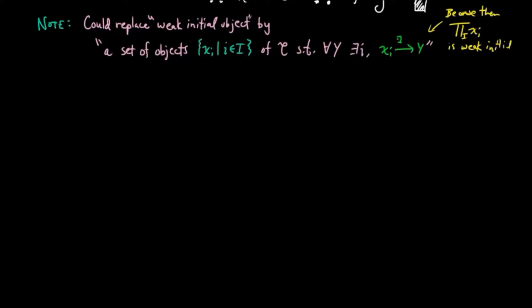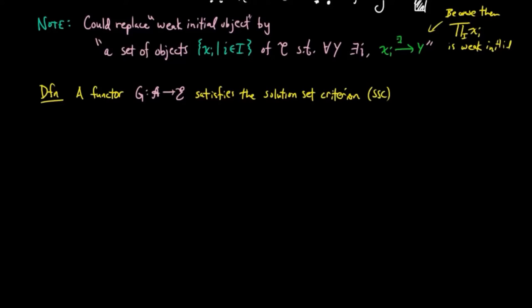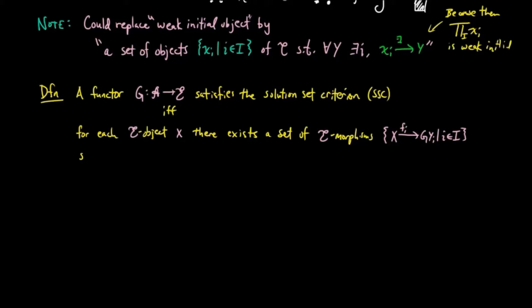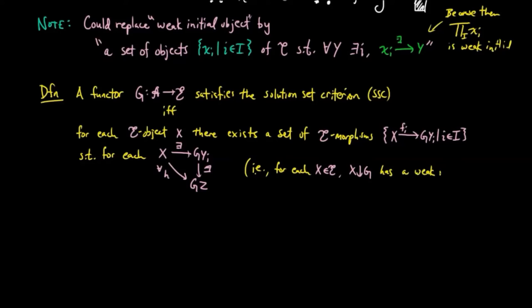This gives us the definition of a solution set criterion. A functor G satisfies the solution set criterion (SSC) if and only if for each object X there exists a set of morphisms FI from X to GYI, indexed by a set I, such that for each morphism H from X to GZ there exists a factorization through some GYI. If we assume that G is continuous, then for each X in the domain category the undercategory X over G has a weak initial object.